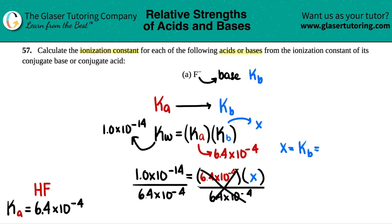So let's see. Calculator time. 1 times 10 to the negative fourteenth divided by 6.4 times 10 to the negative fourth, and if we use two sig figs, it would be 1.6 times 10 to the negative eleventh, and there you go. That's your answer.